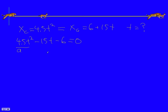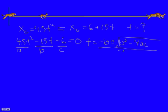That avoids some common errors that I notice students making. So a is 4.5, b is negative 15, and c is negative 6. We need the quadratic formula to solve for this, so time is going to be minus b plus or minus the square root of b squared minus 4ac, and then the whole thing over 2a.